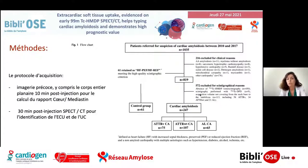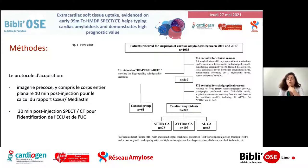Ils ont également exclu les patients pour lesquels la scintigraphie avec les clichés précoces était soit non interprétable, soit absente. On arrive ainsi à une cohorte de 247 patients, avec principalement des amyloses à transthyrétine sauvages (107 patients), 75 mutées et 65 AL.